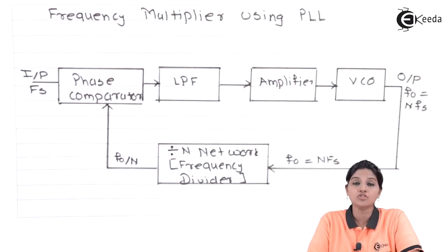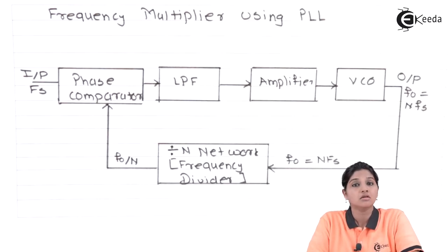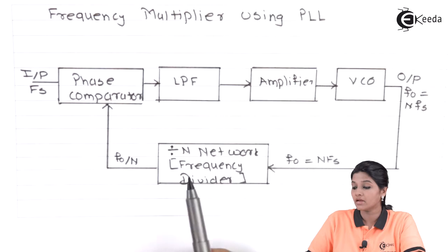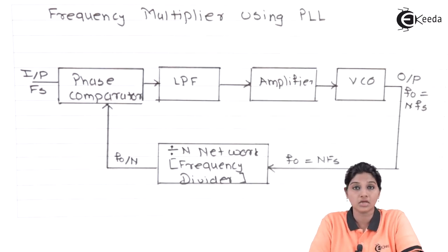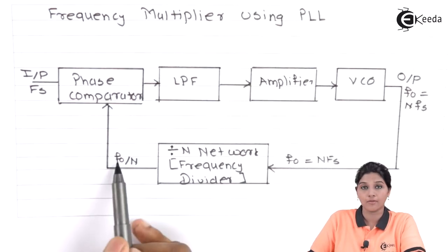Phase detector has two inputs: the input signal with frequency FS and amplitude VS, and the feedback signal with amplitude V0 and frequency F0. The feedback signal is the output from VCO. When a divide by N network is connected between VCO output and phase detector input, then the output becomes F0 by N.